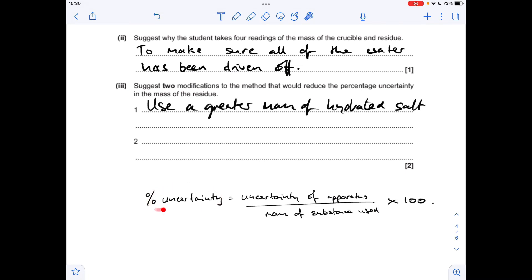The other way we can make the percentage uncertainty lower is to make this number lower. So how do we do that? We use a more accurate balance. They've used a two decimal place balance. We could use a three decimal place balance, which obviously has a lower uncertainty.